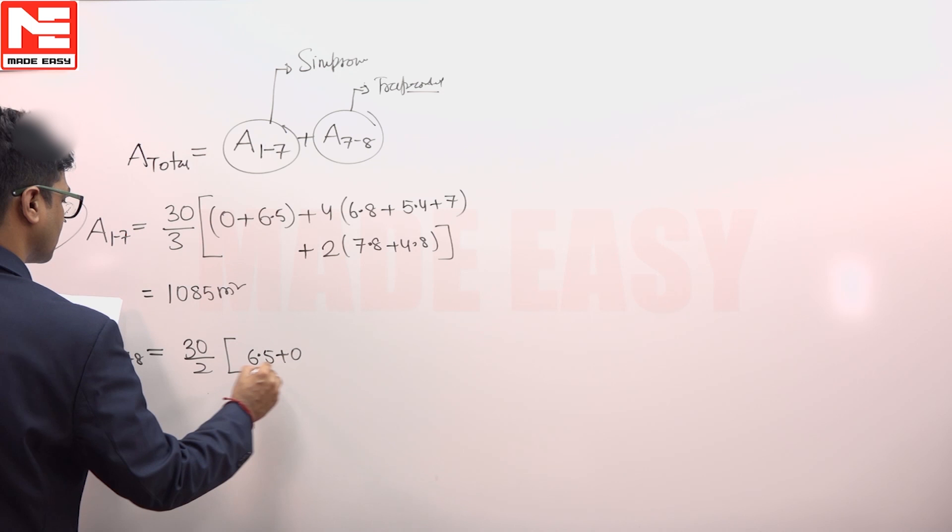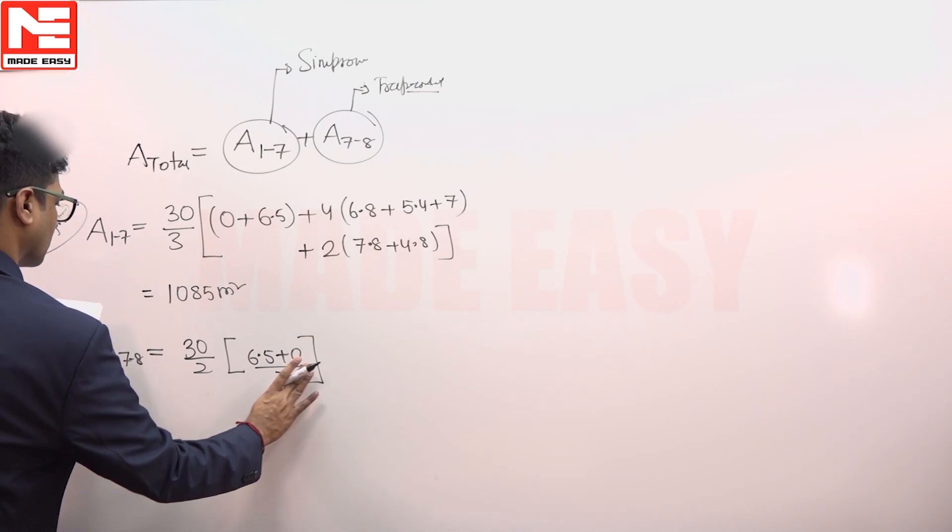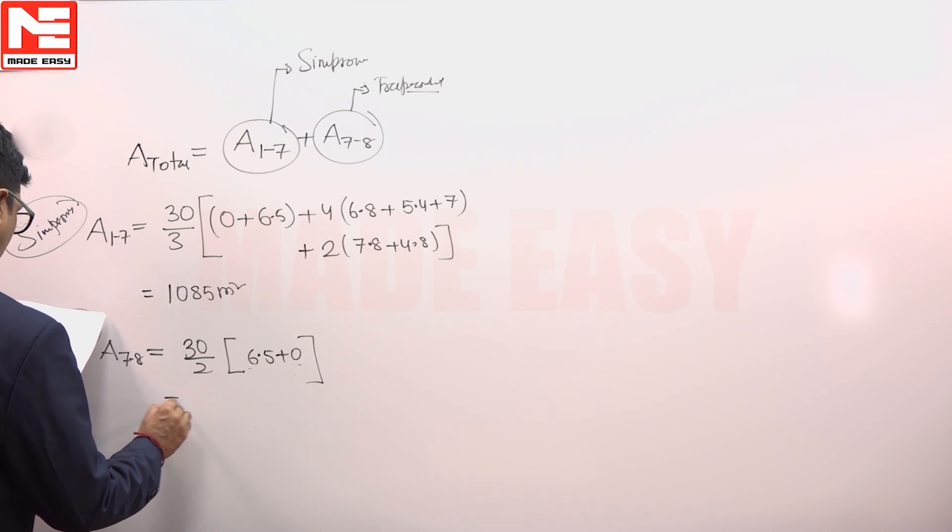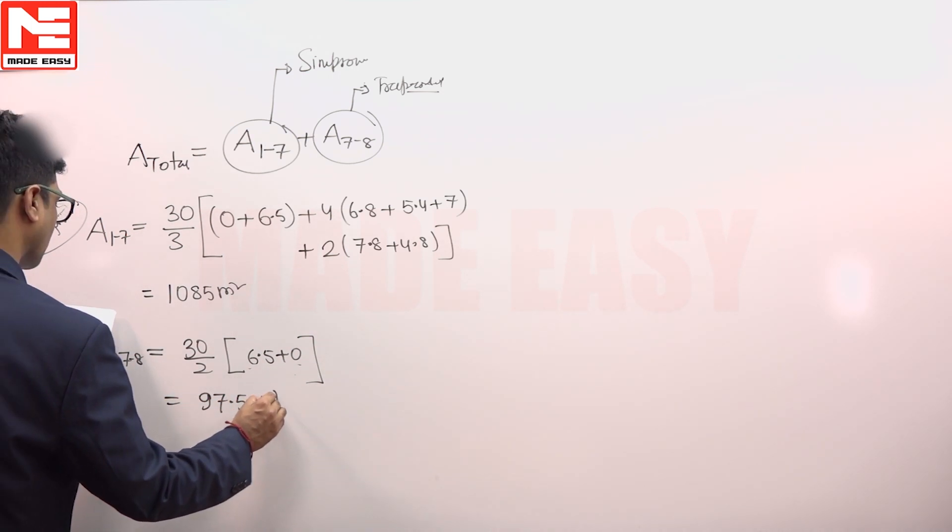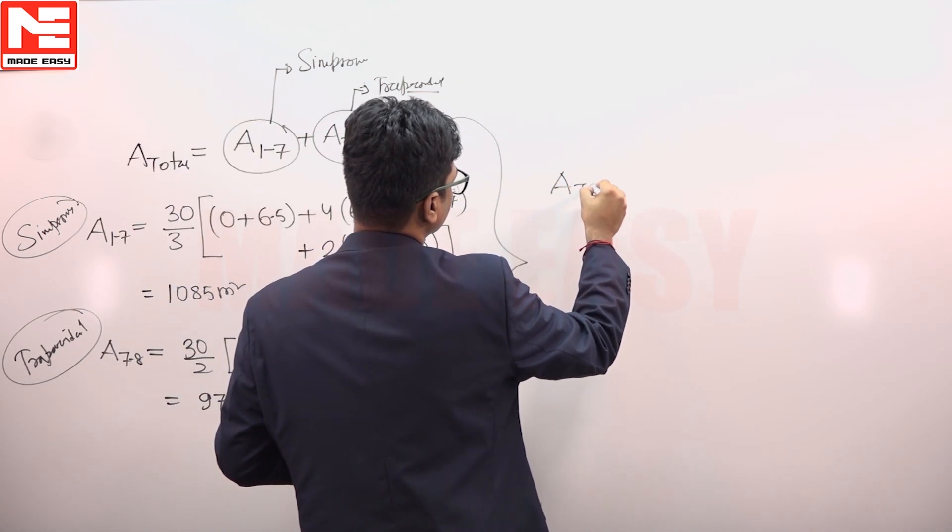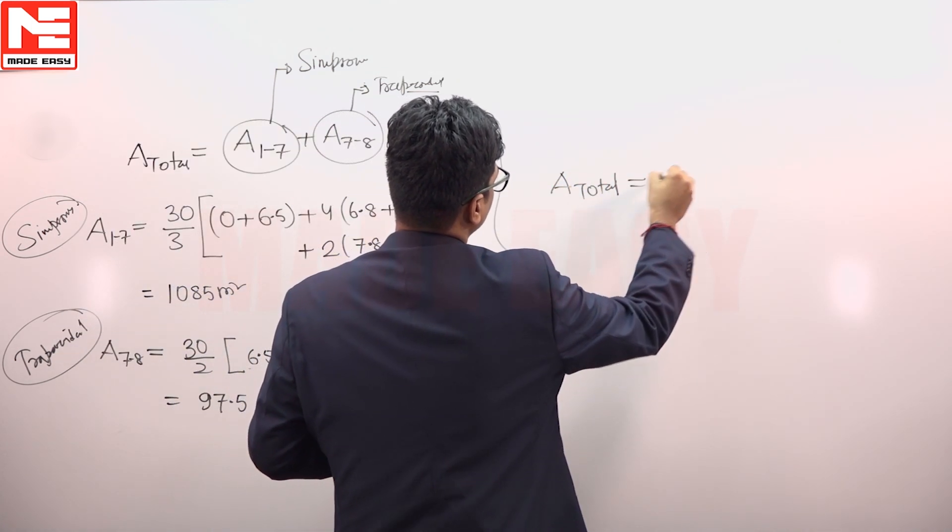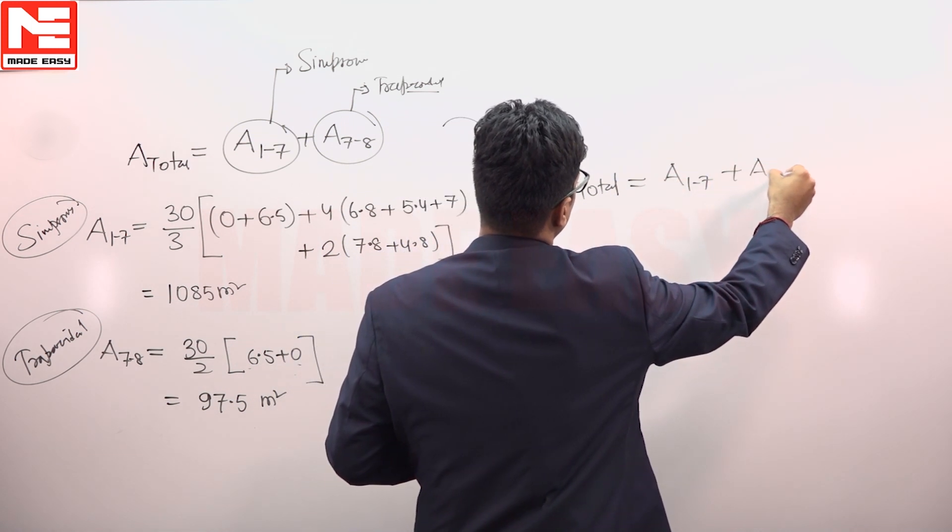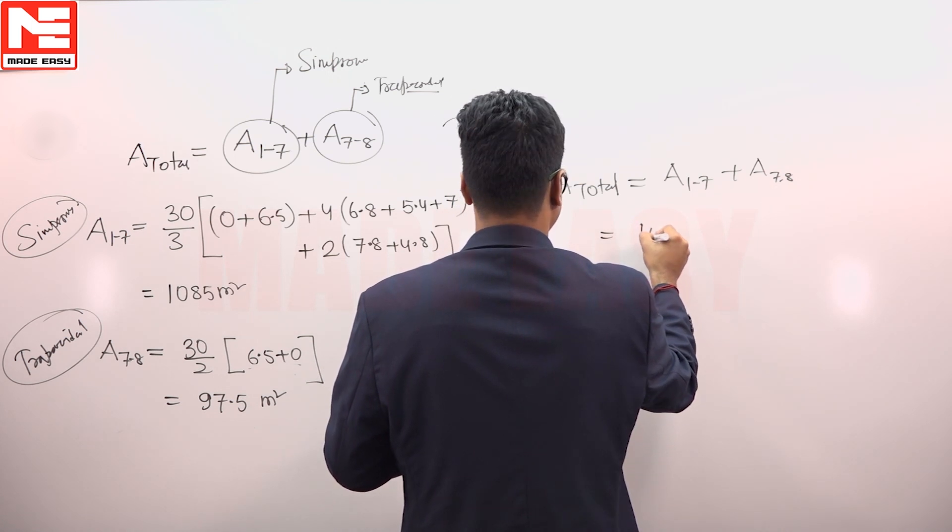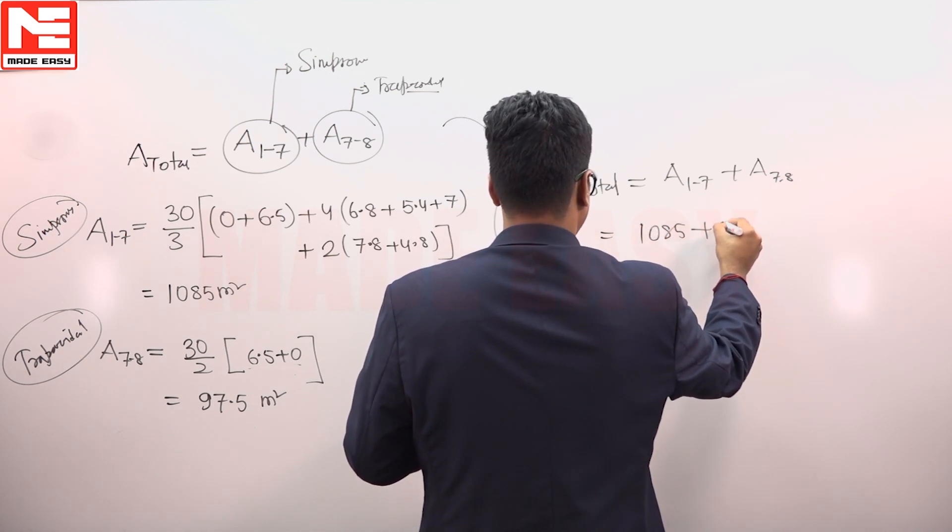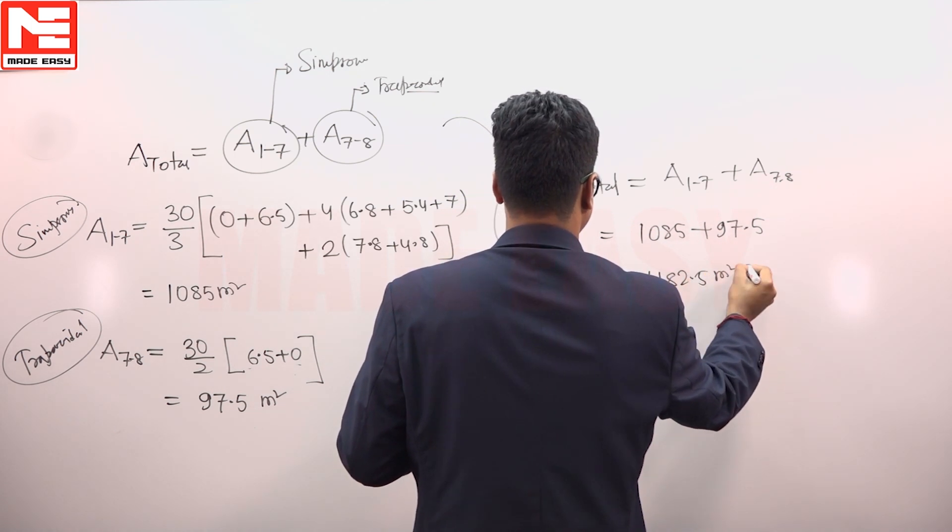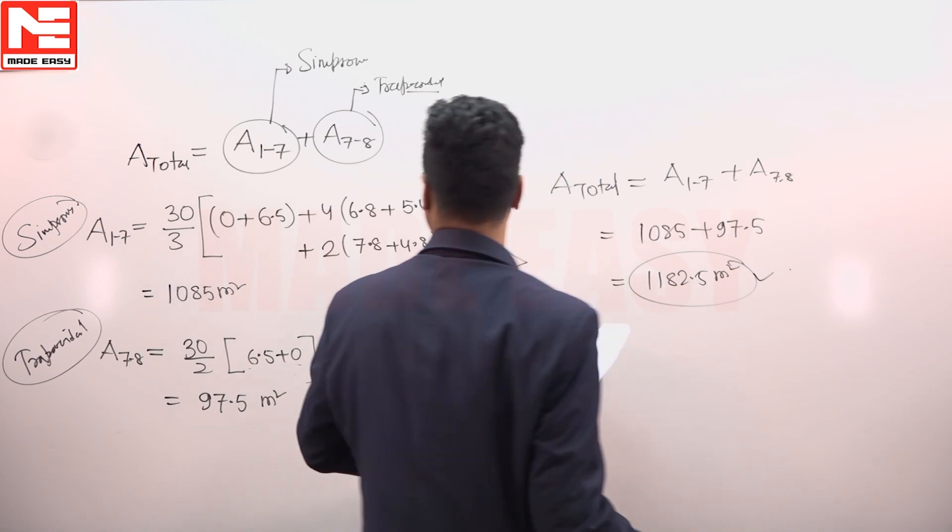So now this is equal to 97.5 meter square. Hence, area total 1 to 7 plus area 7 to 8, so this is equal to 1085 plus 97.5. This is 1182.5 meter square, is the correct answer for this question.